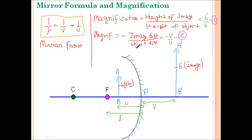If we combine these two formulas, we get: H'/H = −V/U.